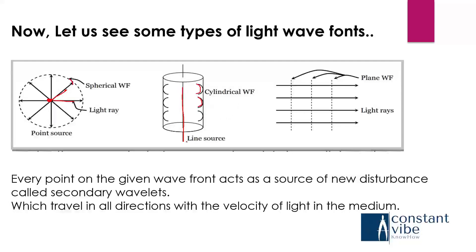Suppose there are many lines of waves, like light beams — light rays going like this in parallel. In that case, a plane wavefront will be generated. So these are the three types of wavefronts: spherical, cylindrical, and plane.